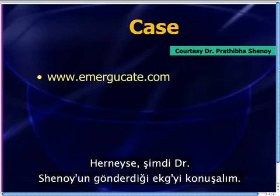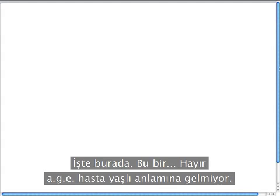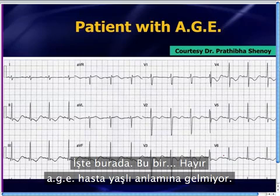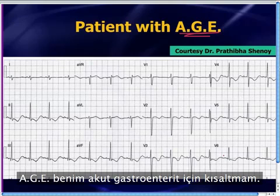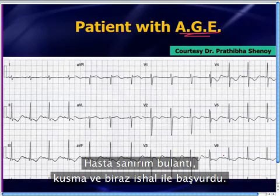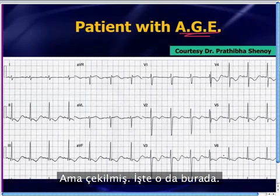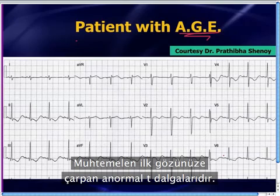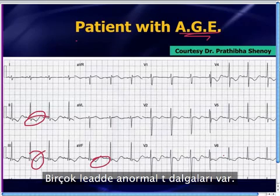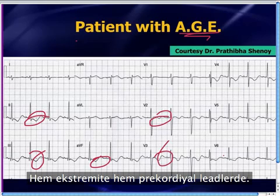Let's talk about this week's EKG that Dr. Shinoi sent. It's a patient with AGE — that's my abbreviation for acute gastroenteritis. The patient came in with some nausea, vomiting, and diarrhea, and a 12-lead EKG was obtained. And probably what's jumping out at you are these abnormal T-waves. There are abnormal T-waves in a whole bunch of leads — in the limb leads and also in the precordial leads.